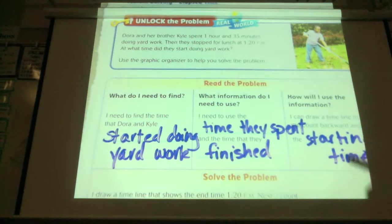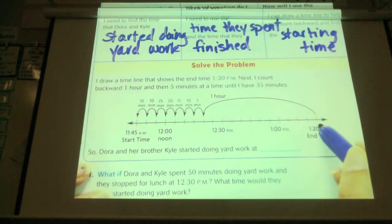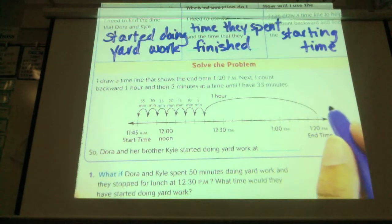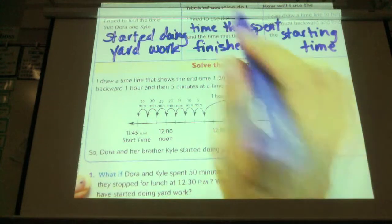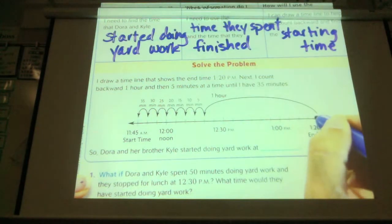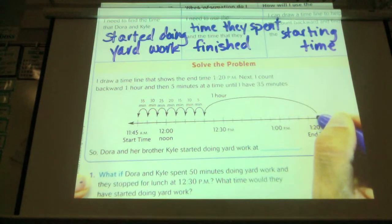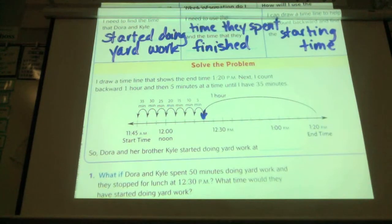So here's my number line down here. I'll draw a number line. They ended at 1:20. And I'm just going to work my way back a little bit and see what happens. So I'm starting at 1:20. I know that they worked 1 hour and 35 minutes. So I'm going to jump back 1 hour first. 1:20 minus 1 hour is going to be 12:20.